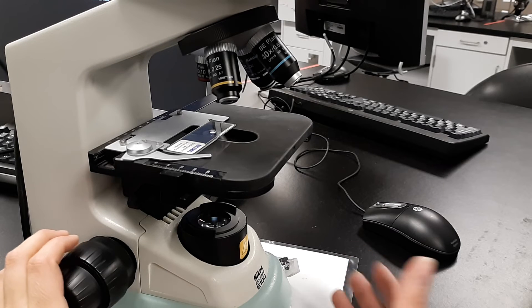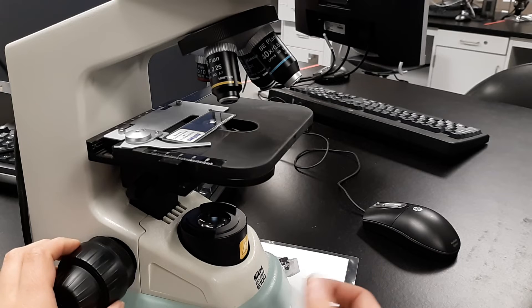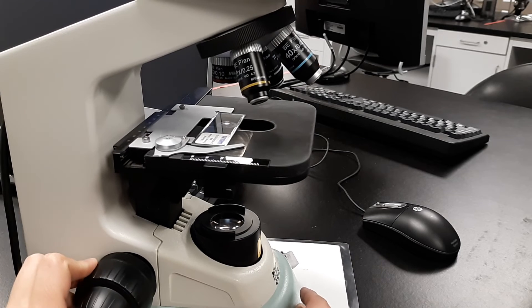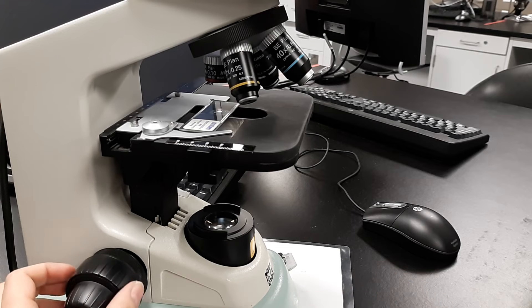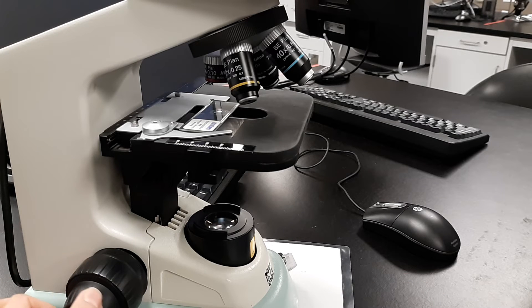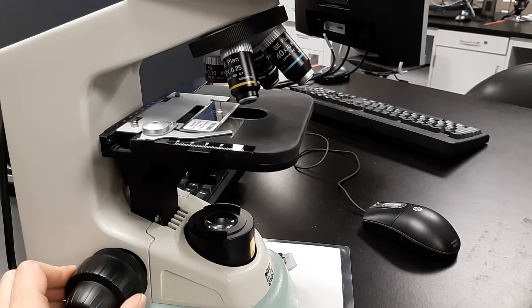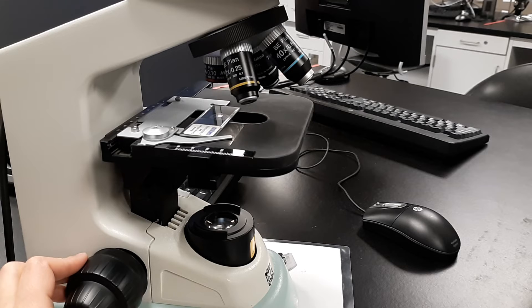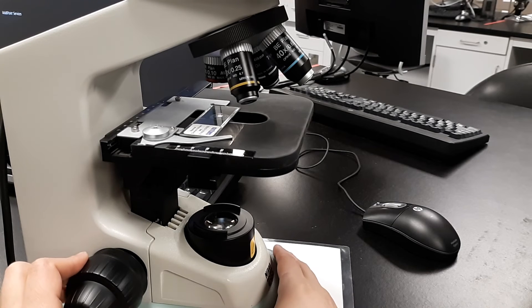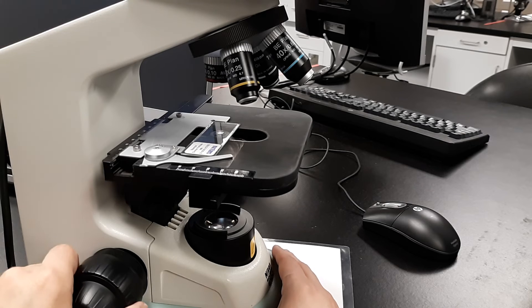There's a method called the top-bottom method. Start on the red objective and go all the way to the top. While looking in, start to focus down. This slowly brings the object into view. Make sure you're looking in so you don't miss it. There's another method where you start at the bottom and, while looking in, scroll up.